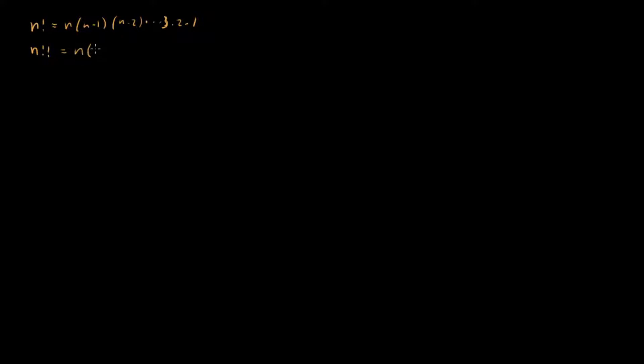The double factorial — and maybe you can guess just from the name — is equal to n times n minus 2 times n minus 4, all the way down to 1. So it's exactly like the factorial function, except instead of taking steps down by 1 for each term, you're taking steps down by 2.